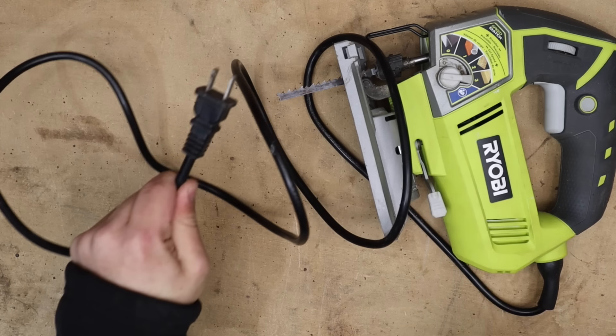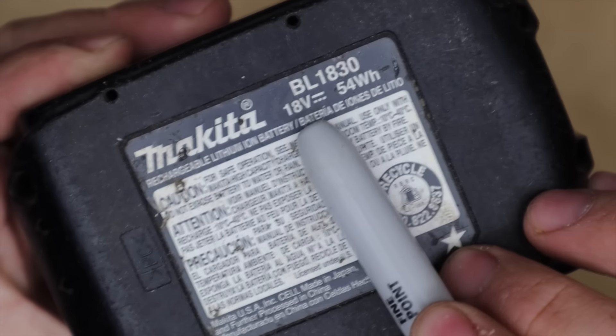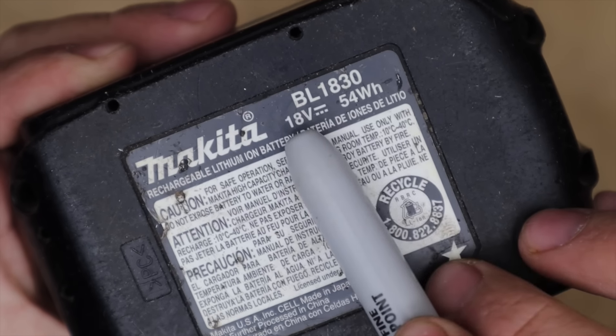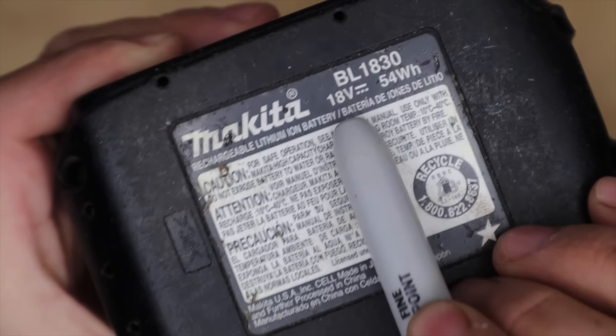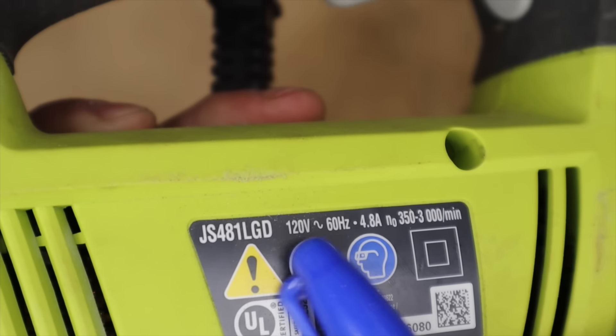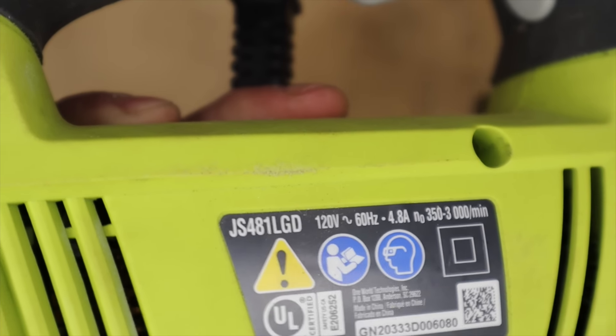Most devices that are intended to be plugged in or charged will have a label indicating their voltage and current type. This battery for example outputs 18 volts direct current. This jigsaw for example has an input of 120 volts.